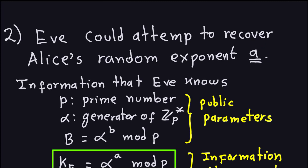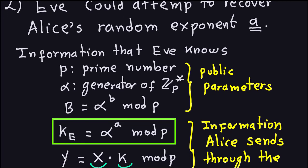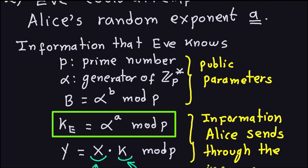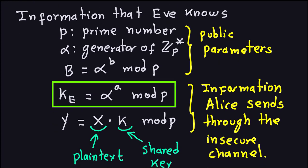Let's go over what Eve actually knows from the ElGamal scheme. Eve knows P, Alpha, and Beta, which are the public parameters. She also knows the ephemeral key and the ciphertext Y, because she is listening to the channel. The ciphertext is the plaintext times the shared key. The shared key is not sent through the channel — only these five numbers are transmitted.